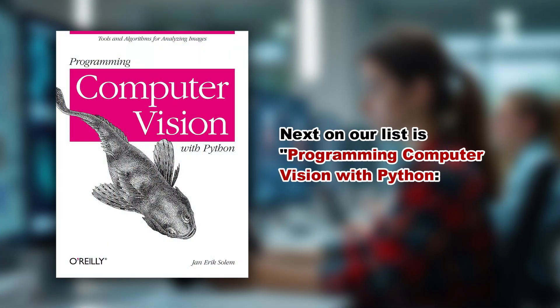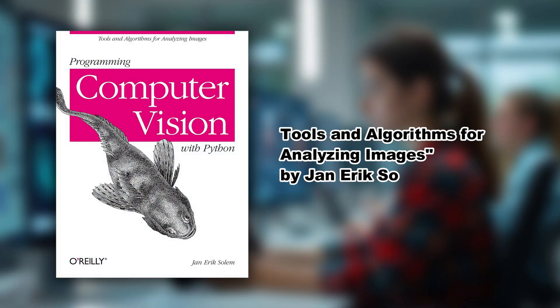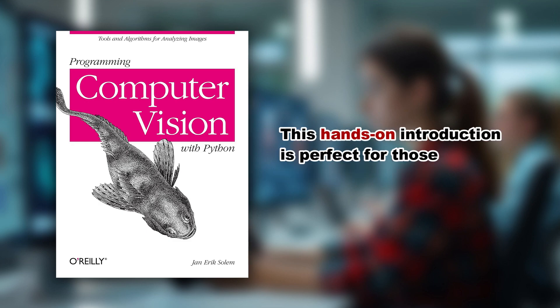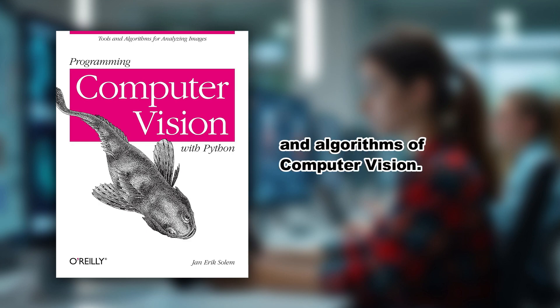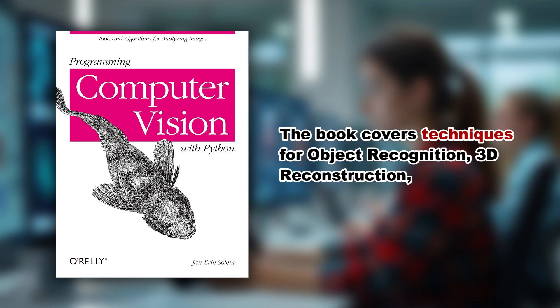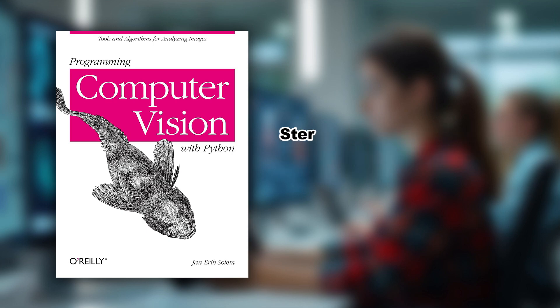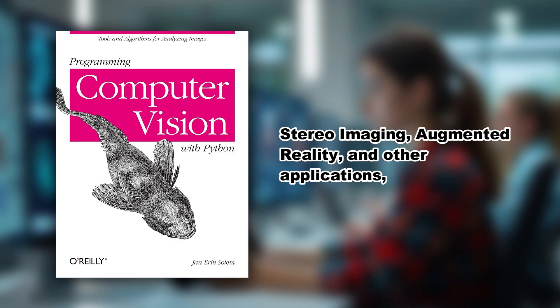Next on our list is Programming Computer Vision with Python: Tools and Algorithms for Analyzing Images by Jan-Erik Solem. This hands-on introduction is perfect for those seeking to understand the underlying theory and algorithms of computer vision. The book covers techniques for object recognition, 3D reconstruction, stereo imaging, augmented reality, and other applications.